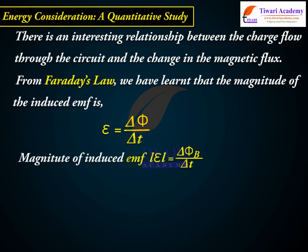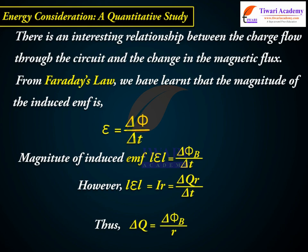Magnitude of induced EMF |ε| = ΔΦ_B/Δt. However, |ε| = IR = ΔQR/Δt. Thus, ΔQ = ΔΦ_B/R.